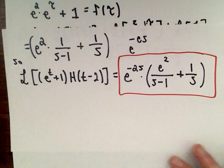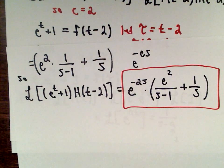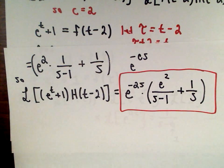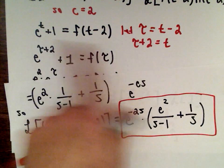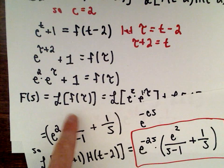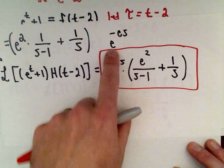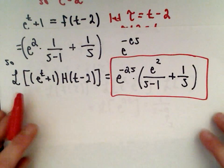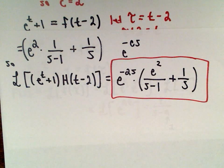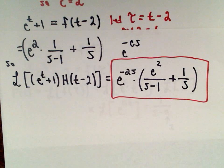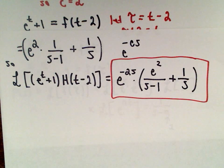It's interesting how the proof and examples both rely on the same change of variable trick to make things work out. The general approach: do a change of variable, take the Laplace transform using your tables, then multiply by e to the negative c·s. I hope these examples help. I'm also going to do an example of finding an inverse Laplace transform in a separate video, so feel free to check that out too. Good luck!